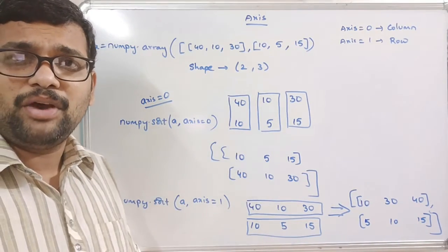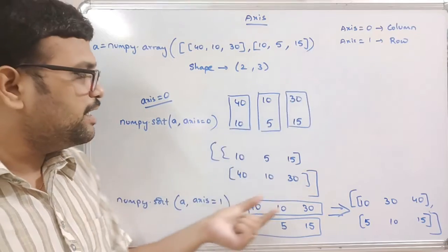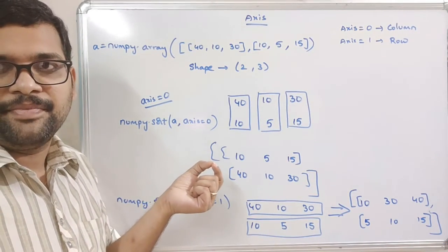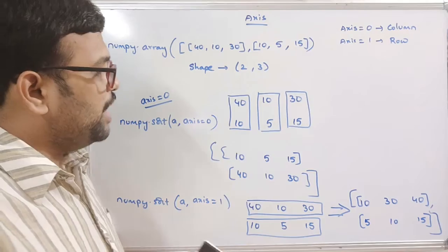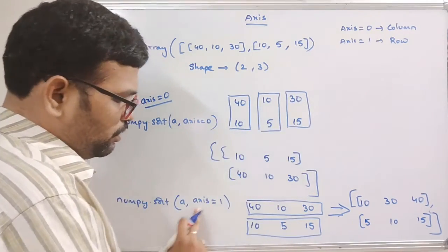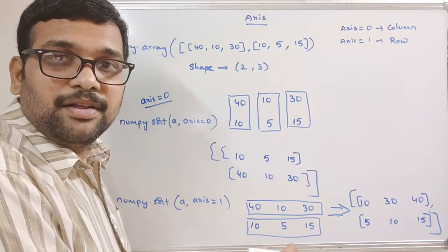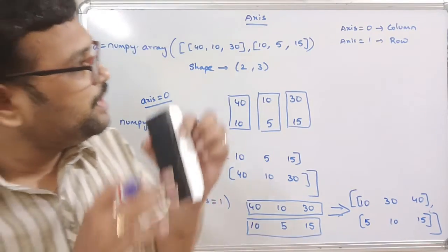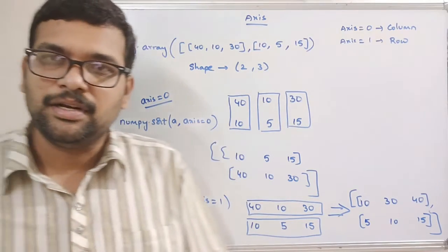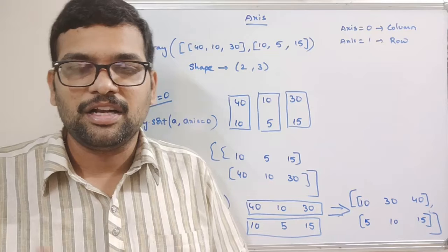This is the only thing you have to remember: axis equal to zero means column-wise operations will be done, and axis equal to one means row-wise operations will be done. I will now demonstrate this using the sort function in the interpreter.